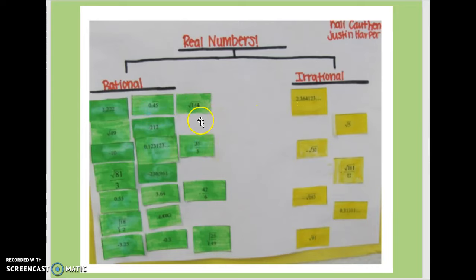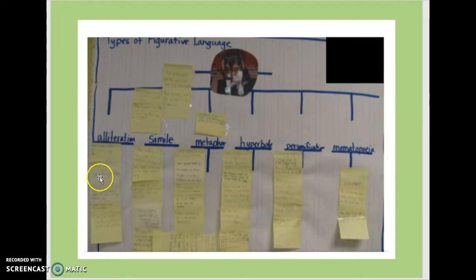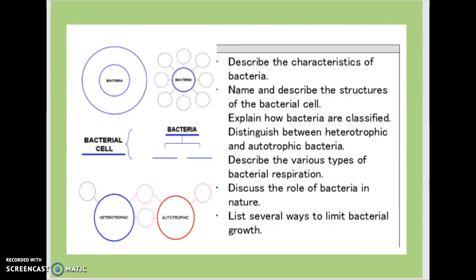Rational versus irrational: you give the kids the cutout, they put it on the paper and then color it so they can't copy someone else's. Here's one for figurative language — a great ticket-out-the-door activity where you give kids a post-it and they have to classify where it goes. We need kids to know when they see the word 'characteristics' or 'describe,' it goes right with a bubble map. 'Name and describe' — name is like defining, but describe means adjectives. Comparing two things would be a double bubble, and 'list several ways' — the word list tells them to go to a tree map.